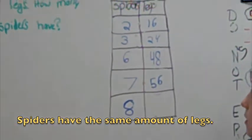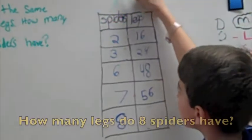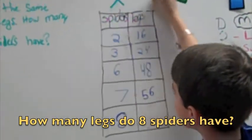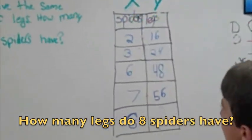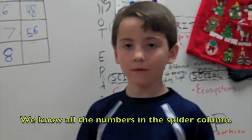First, we need to figure out what X is. And X is... We know X is spiders and Y is legs. So, now we need to figure out how to get from X to Y.